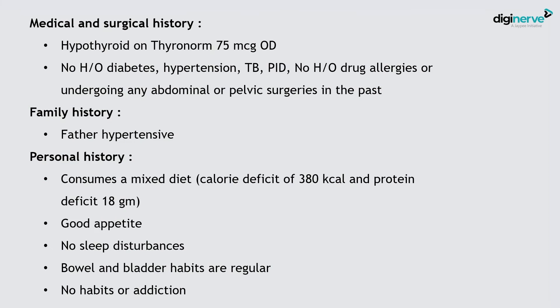Tuberculosis is highlighted as a significant medical history finding, common in India. TB can cause tubal pathology like salpingitis isthmica nodosa, leading to adhesions. Importantly, when a tuberculosis patient who has been treated becomes pregnant, there is approximately a 50% chance of ectopic pregnancy. Previous surgeries are also relevant due to adhesion formation.